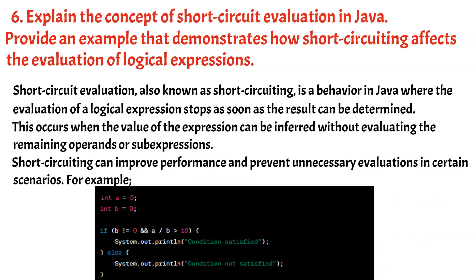The expression b == 0 && a / b > 10 involves both the logical and-and operator and the division operation. However, due to short-circuit evaluation, the division operation is not executed when b is 0 because the left operand of and-and is false, and the overall result will be false regardless of the right operand's value.